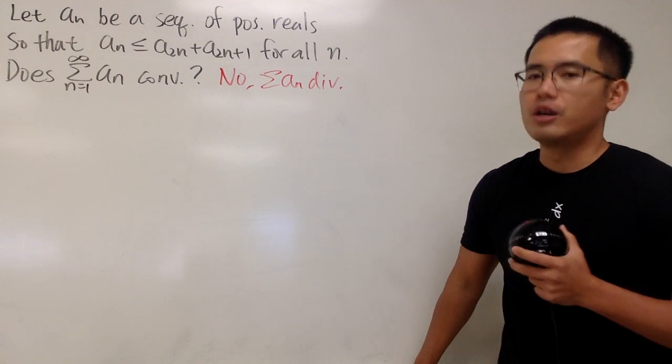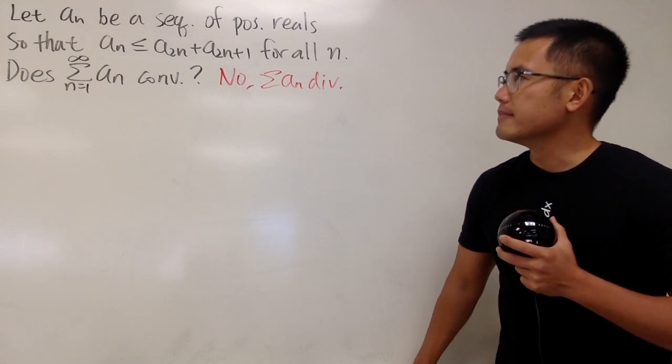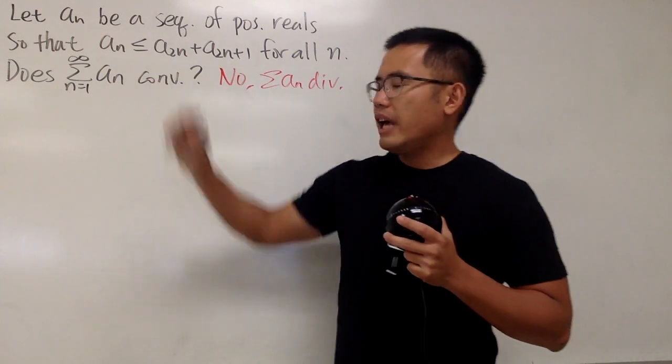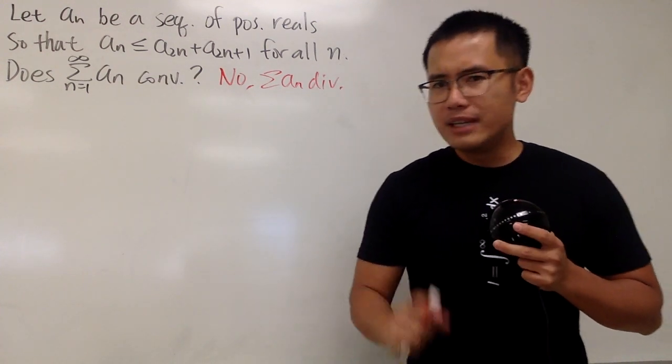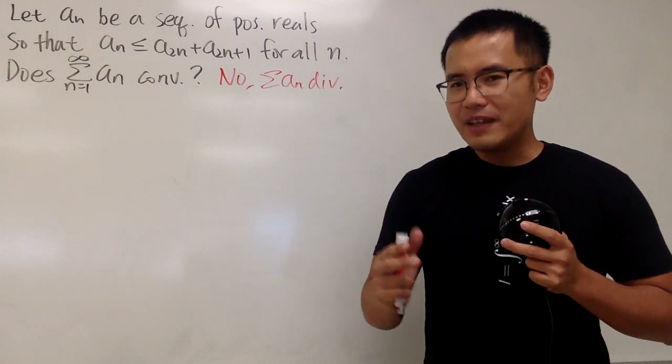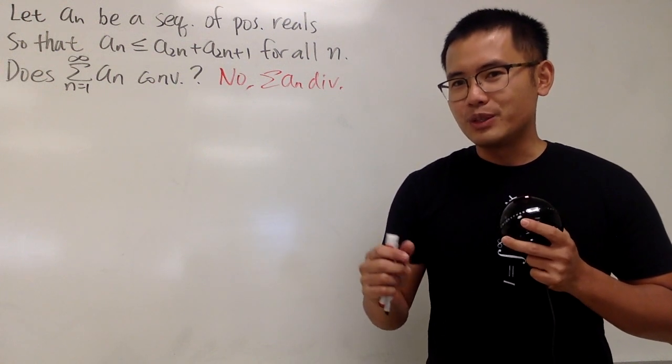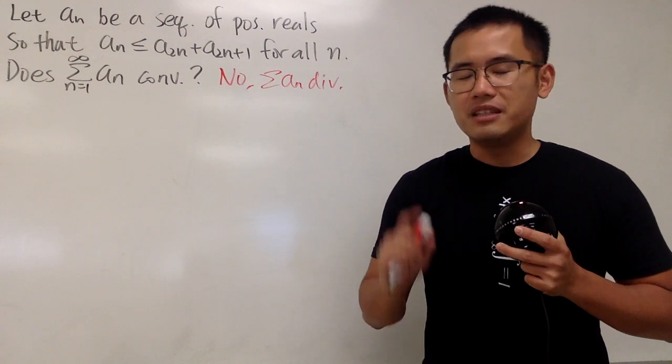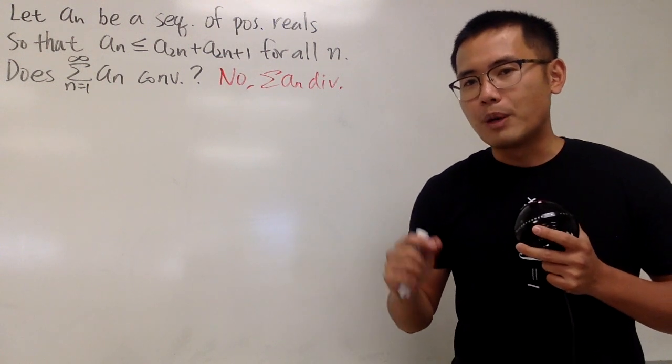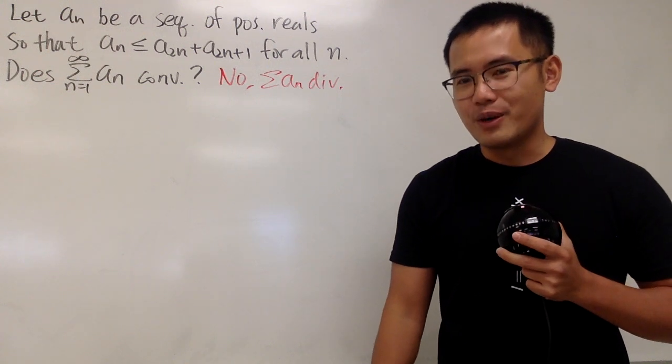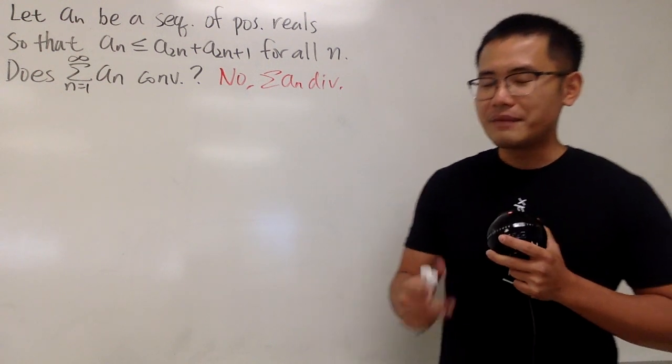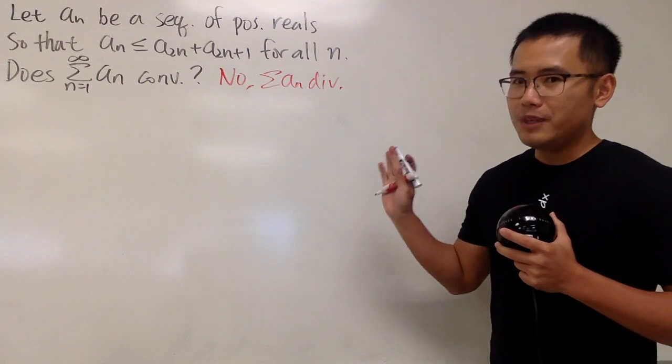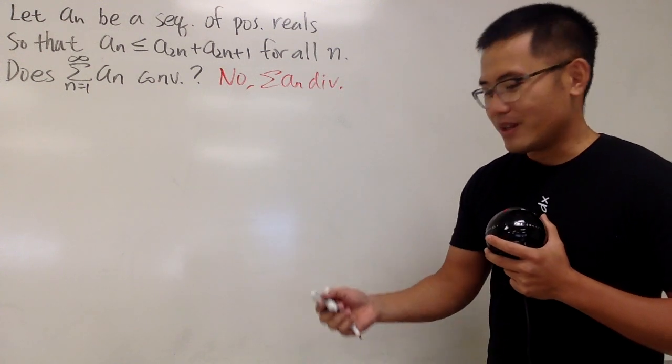And let's see how we can make the argument for that. Hmm, it's weird because we don't really have a formula for aN. We only have inequalities. And remember, there is a famous question that uses inequality to prove that a series diverges. And that is the harmonic series, right? And in fact, I did that for my 100 series video. That's the first question. So if you haven't seen that, be sure you guys go check that out. In fact, it's going to be very similar.